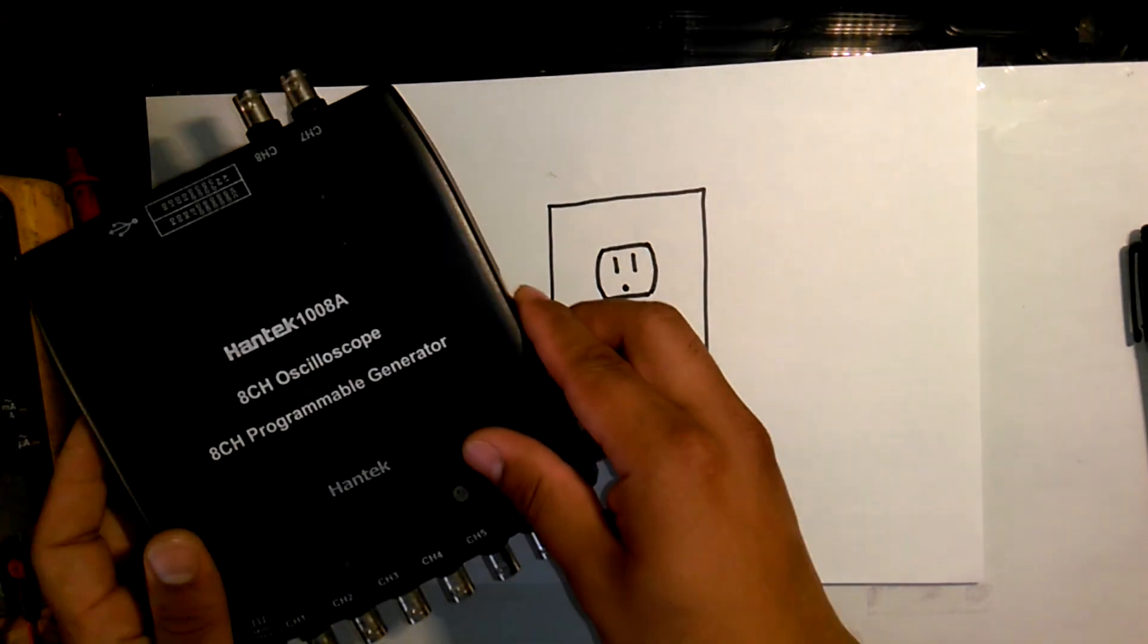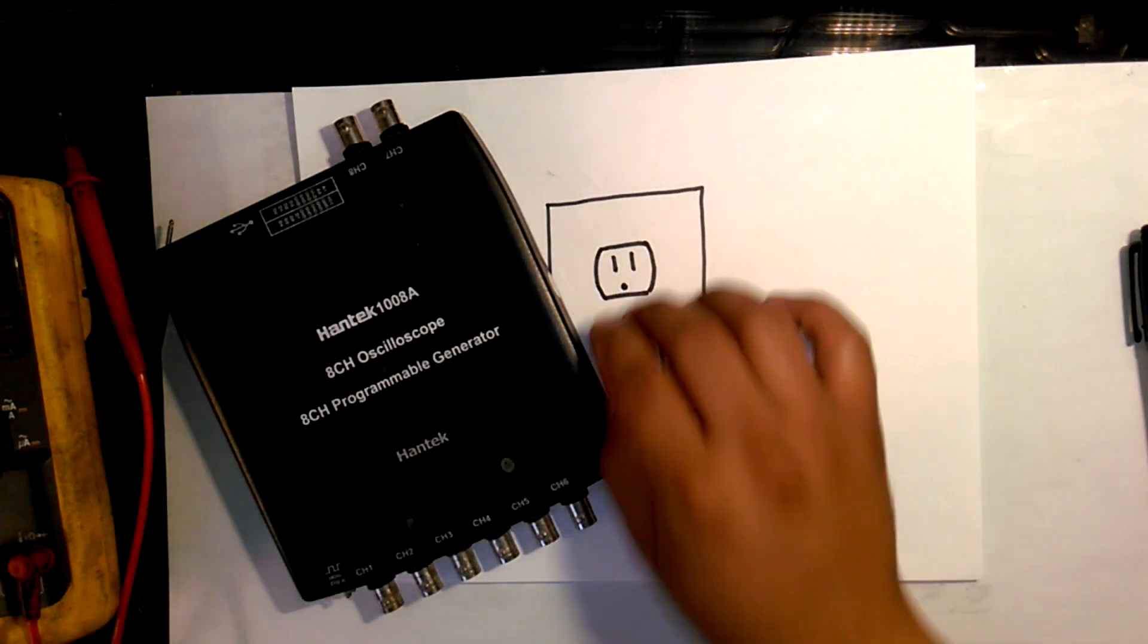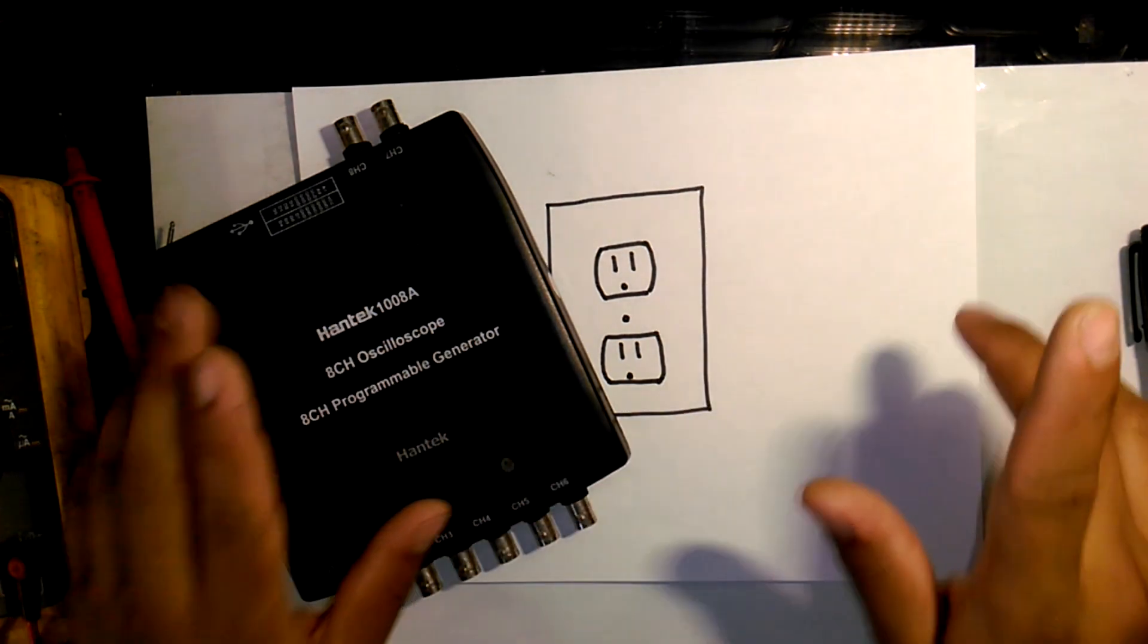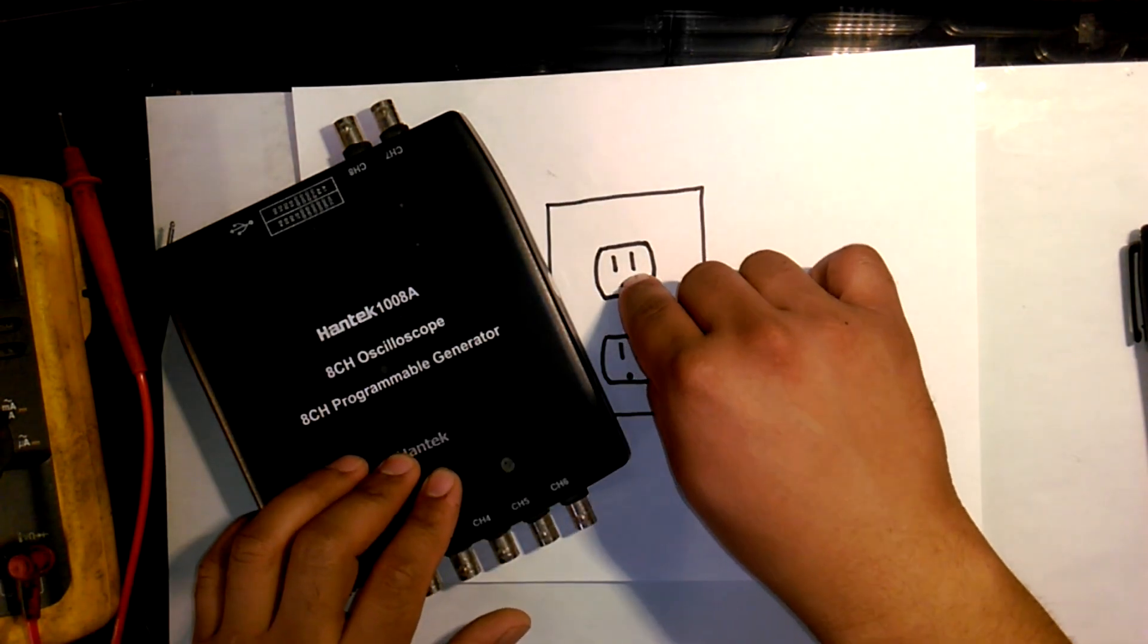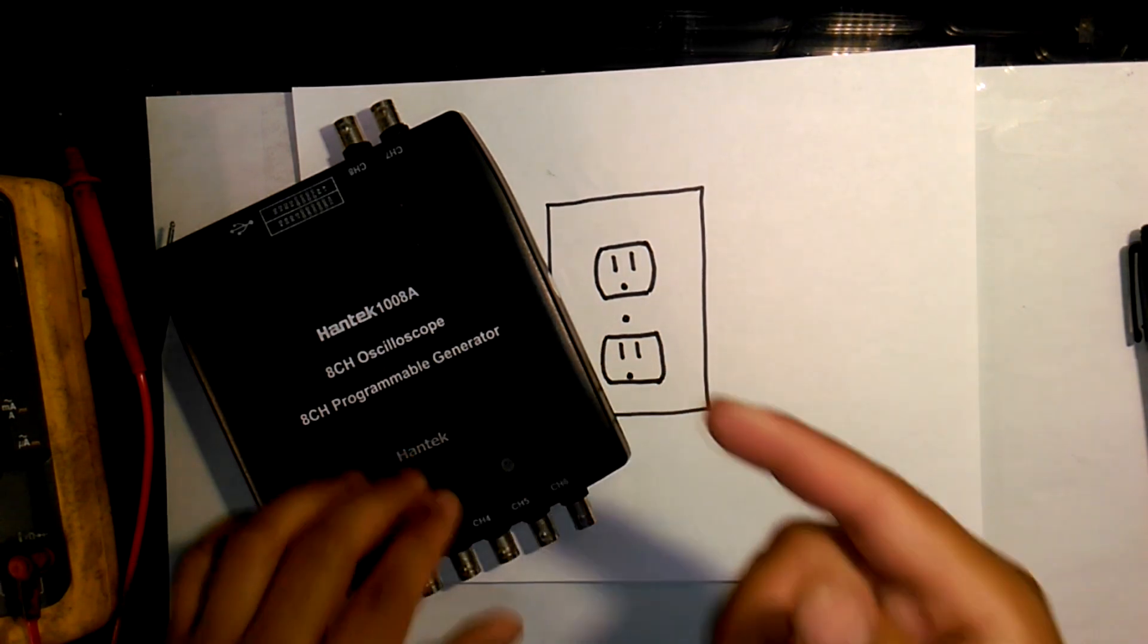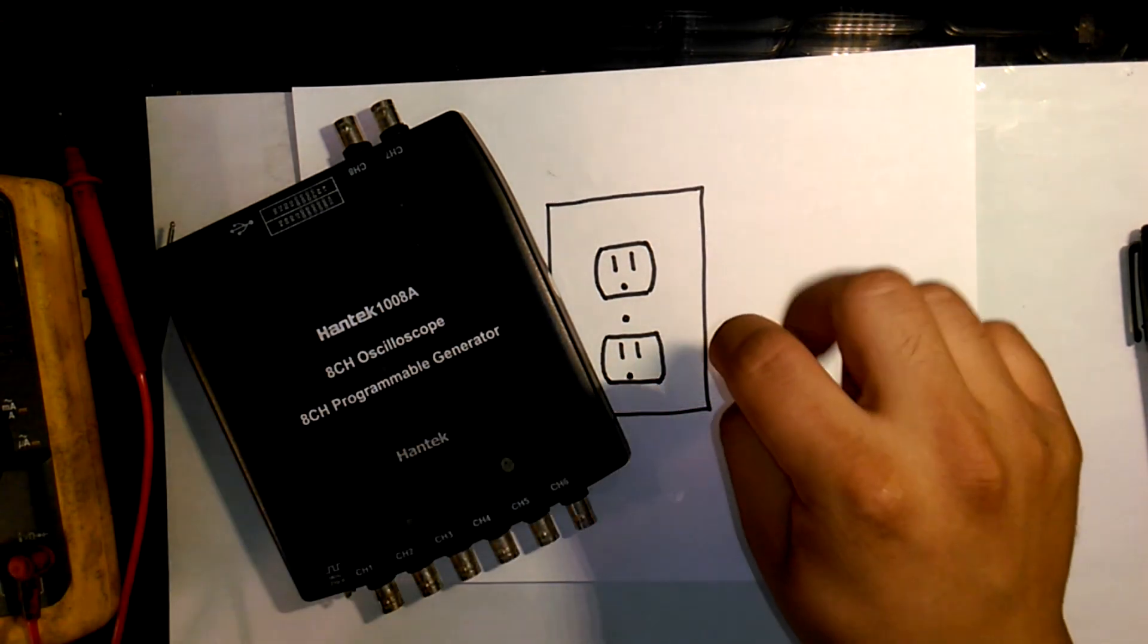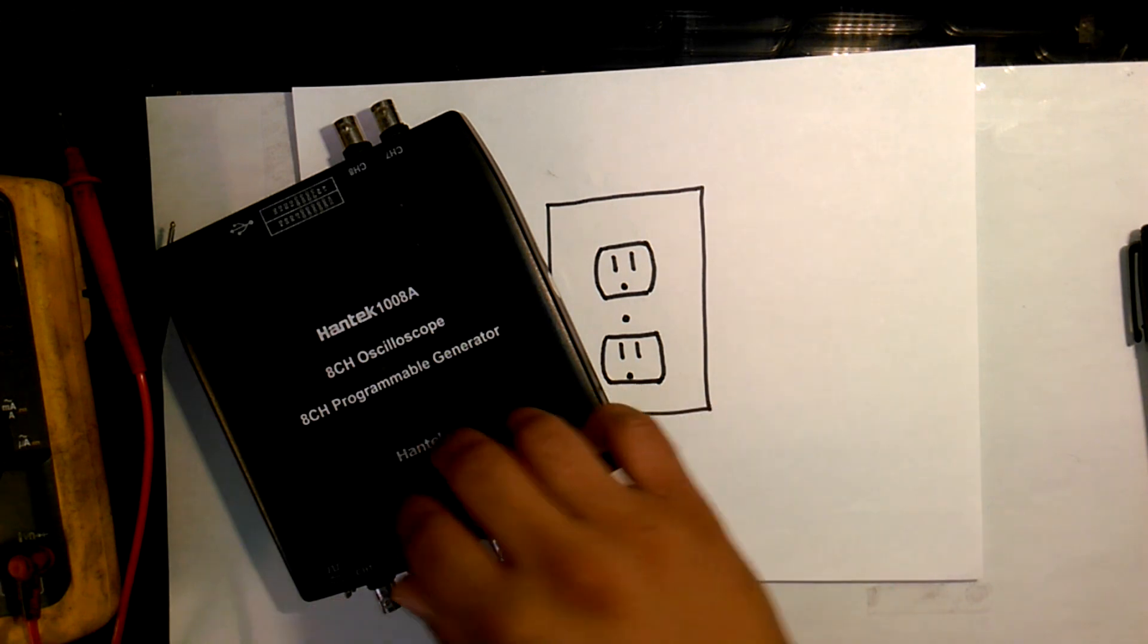If you're watching this video to find out if you can use the Hantek to directly measure the voltage coming out of a wall outlet, the answer is no. Do not do this. Do not use your Hantek to directly measure the voltage out of a wall outlet. You will damage your Hantek, you may hurt or even kill yourself, and you probably will damage the computer you're using with the Hantek and any USB device that the computer is using. So do not do this. You will hurt yourself or hurt your equipment.